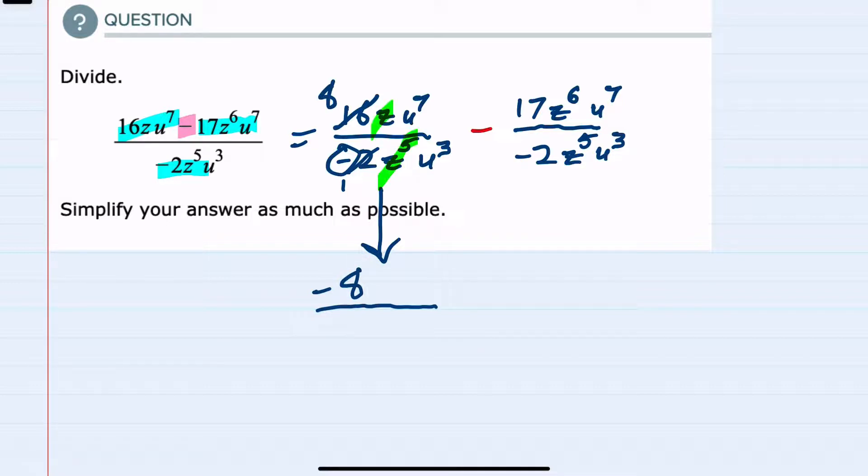Then for the Zs, I have Zs in the numerator and the denominator, only one in the numerator. So for canceling purposes, this one Z in the numerator cancels one of the Zs in the denominator, so I'm left with four Zs in the denominator.